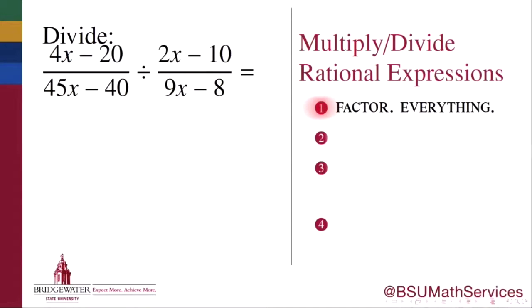Because it is only by factoring that we will be able to know, at the end of the day, what are the common factors in the numerator and denominator that may be canceled to reduce our rational expression into its lowest terms. There is no canceling before everything has been factored. So we'll start this division problem by factoring every expression that we see.